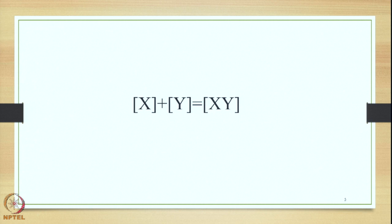The structure of the Bahuvrihi Samasa can be shown in the form of an equation as shown on this particular slide. Here we have X and Y, both independent and separate entities in terms of word form, meaning, and accent. The plus sign in between shows that they are semantically interrelated. The speaker of Sanskrit decides to merge them together and generate an output in the form of XY as one unit — X plus Y is the input and XY one unit is the output.